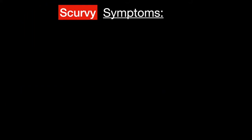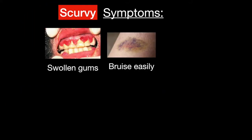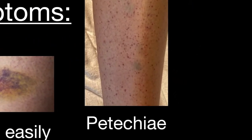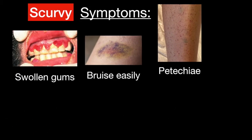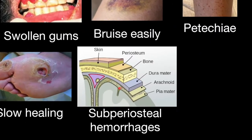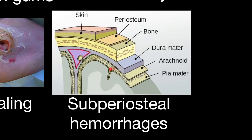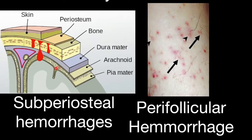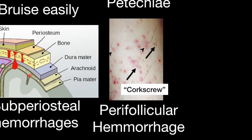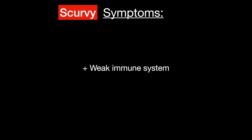The symptoms of scurvy are swollen gums, easy bruising, petechia — which are tiny purple or brown spots in your skin due to bleeding from minor trauma — slow healing, subperiosteal hemorrhages (bleeding between the periosteum and the bone), parafollicular hemorrhages (bleeding in the hair follicle) combined with corkscrew hair, and a weak immune system.